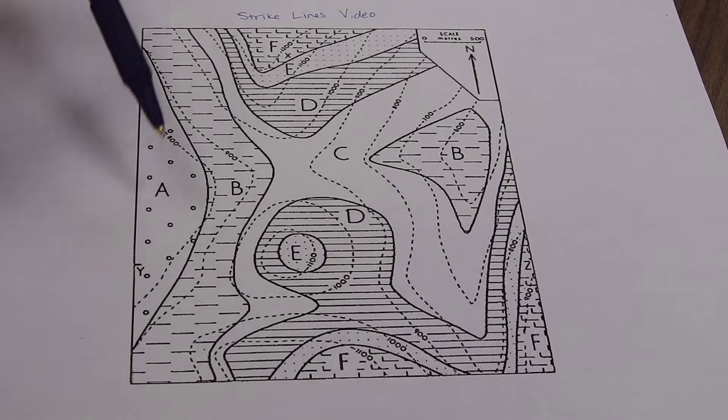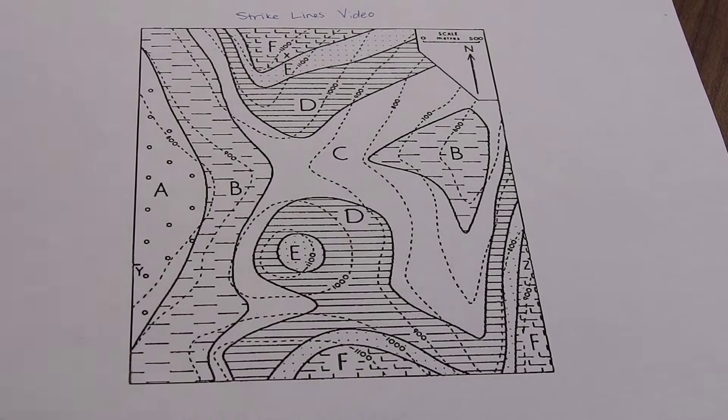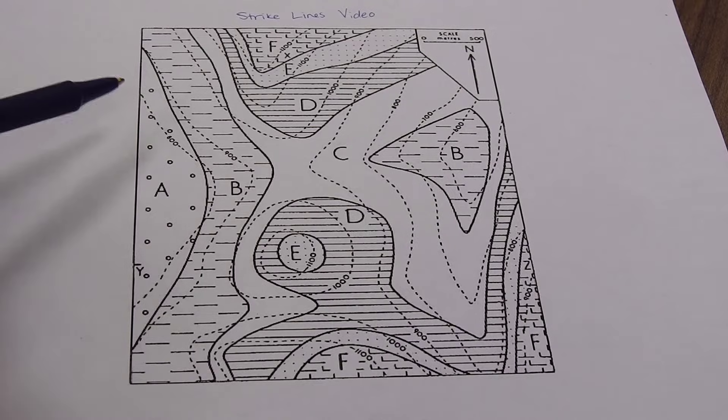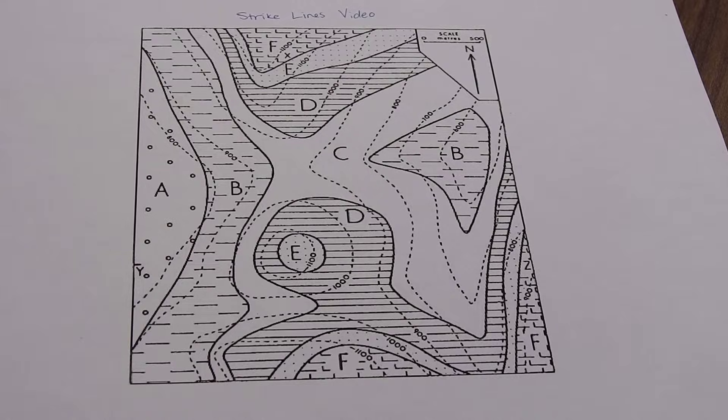So we've got units A, B, C, D, E, and F. And we also have topography. So these dashed lines in here are your topographic contours.